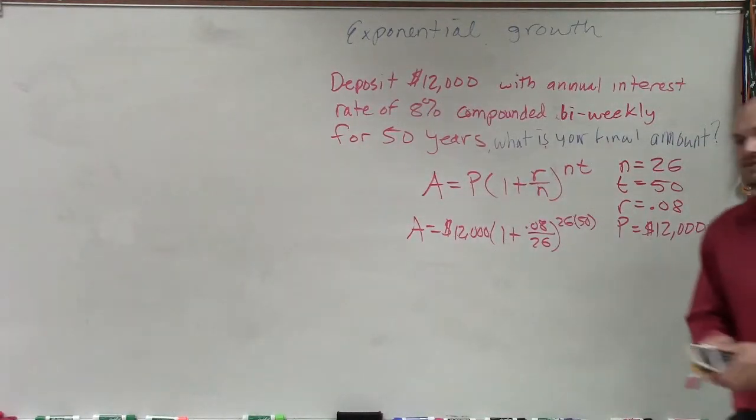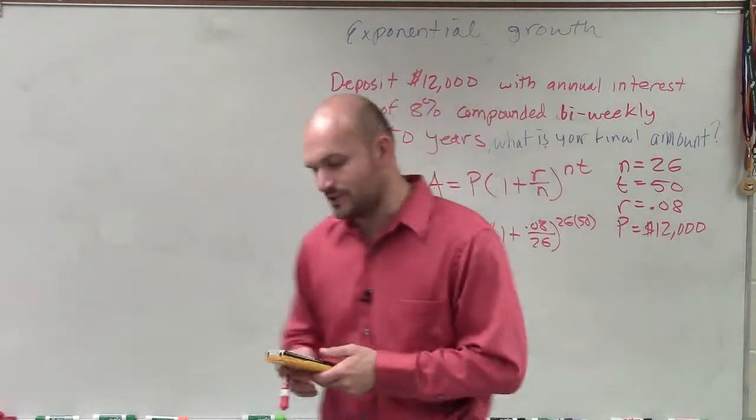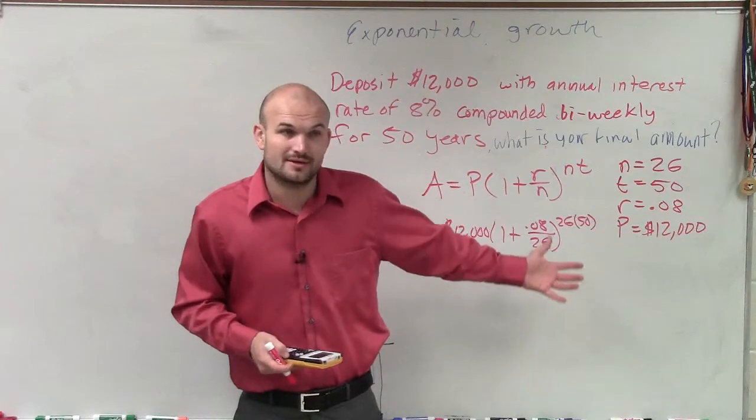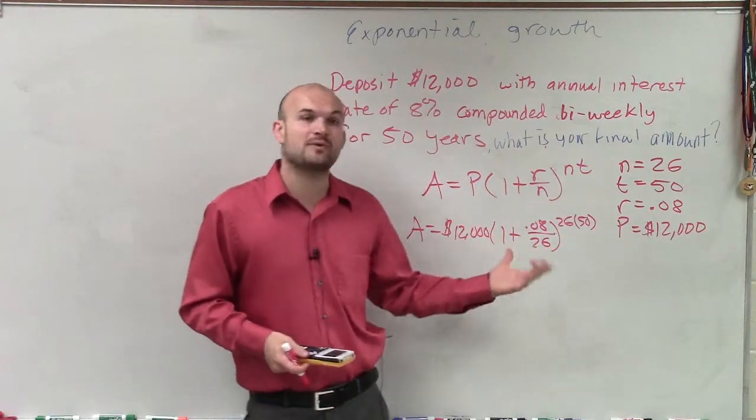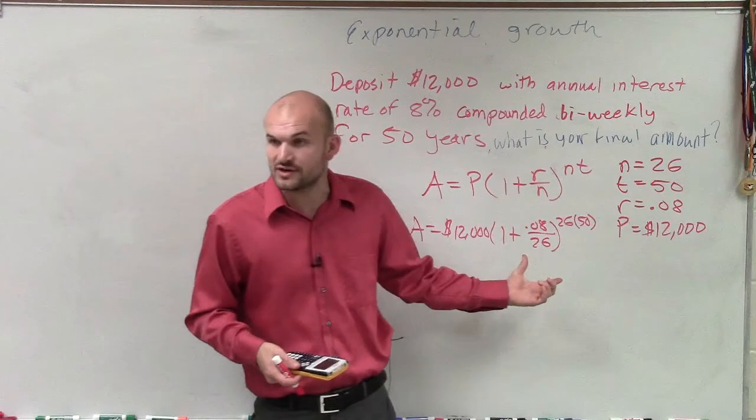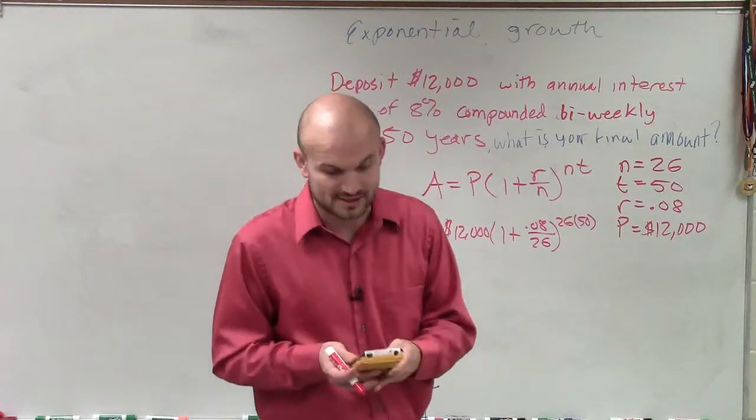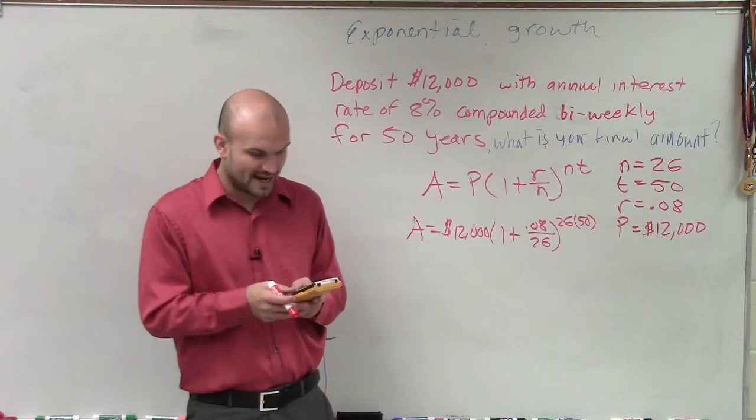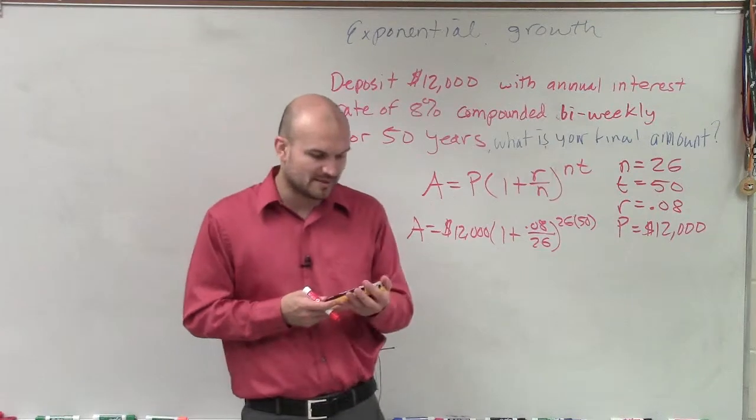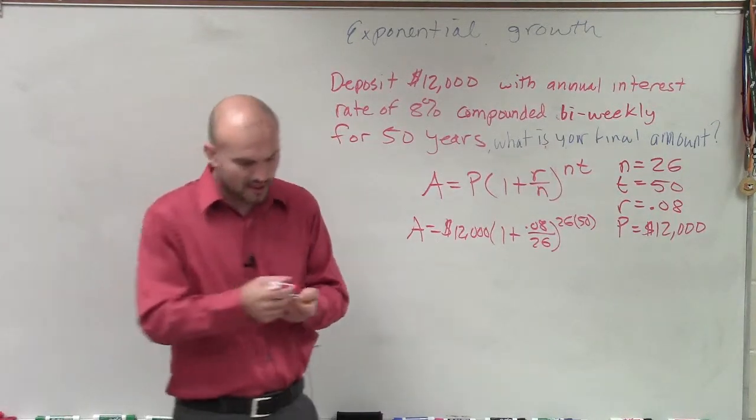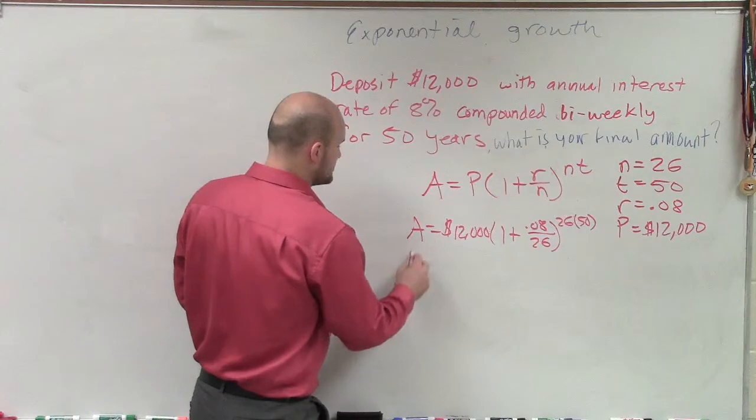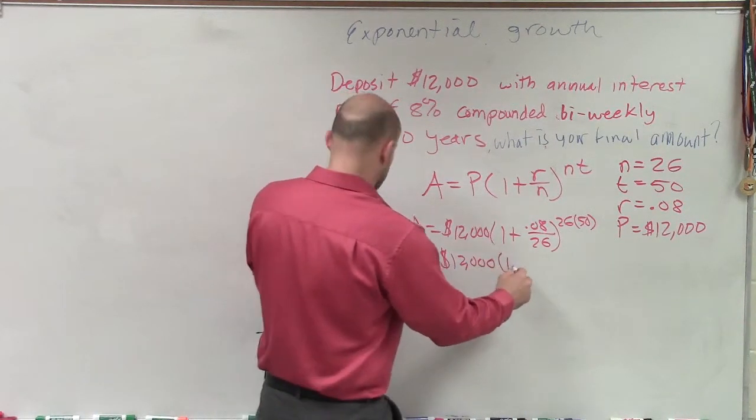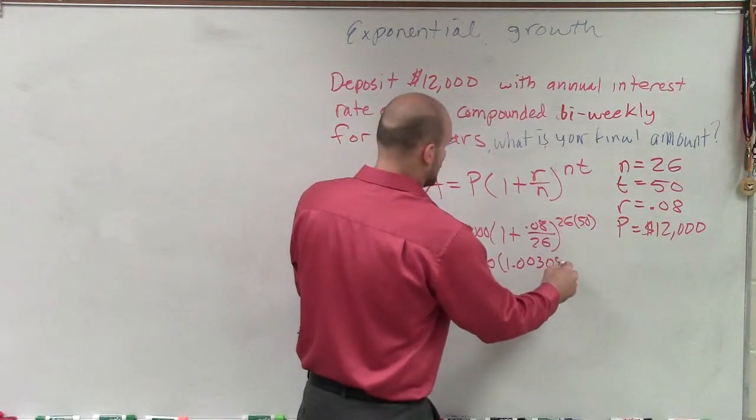So ladies and gentlemen, what I like to do is you can plug this into your calculator, but you've got to sometimes be careful on how you're applying this. I always just like to apply the order of operations because it's something that's very basic that we're used to. When applying order of operations, you always do what's inside the parentheses first. So I need to divide 0.08 divided by 26, and that gives me 0.003076. Then I add that to 1.